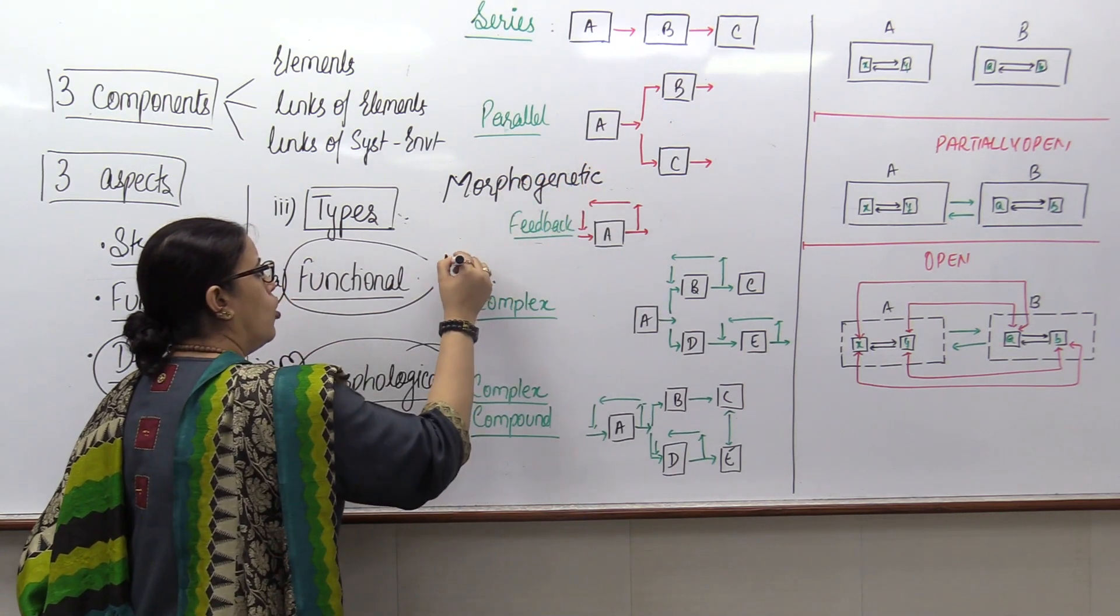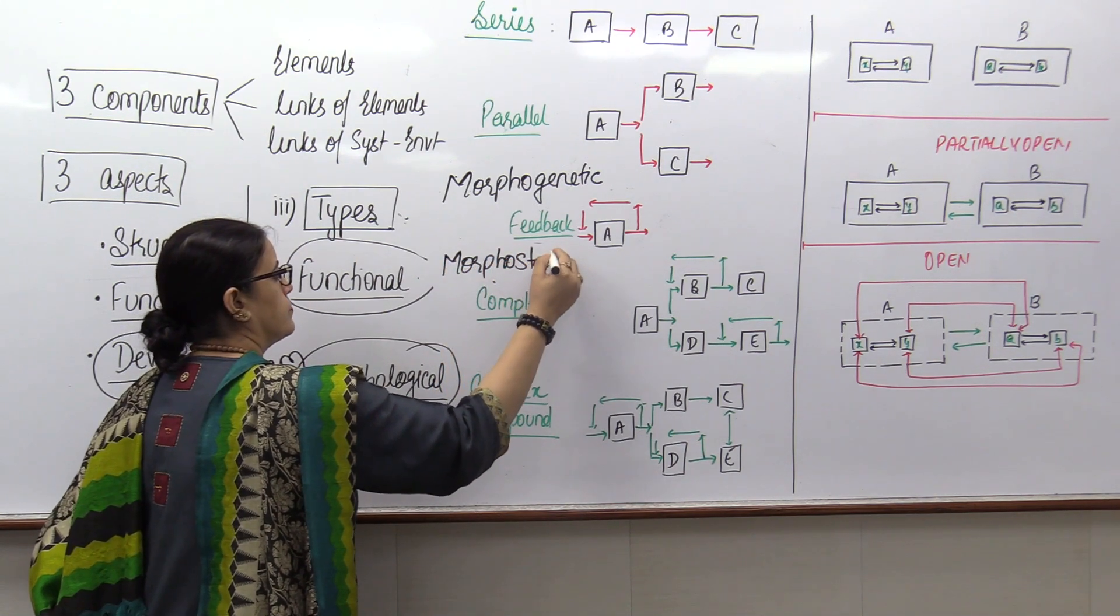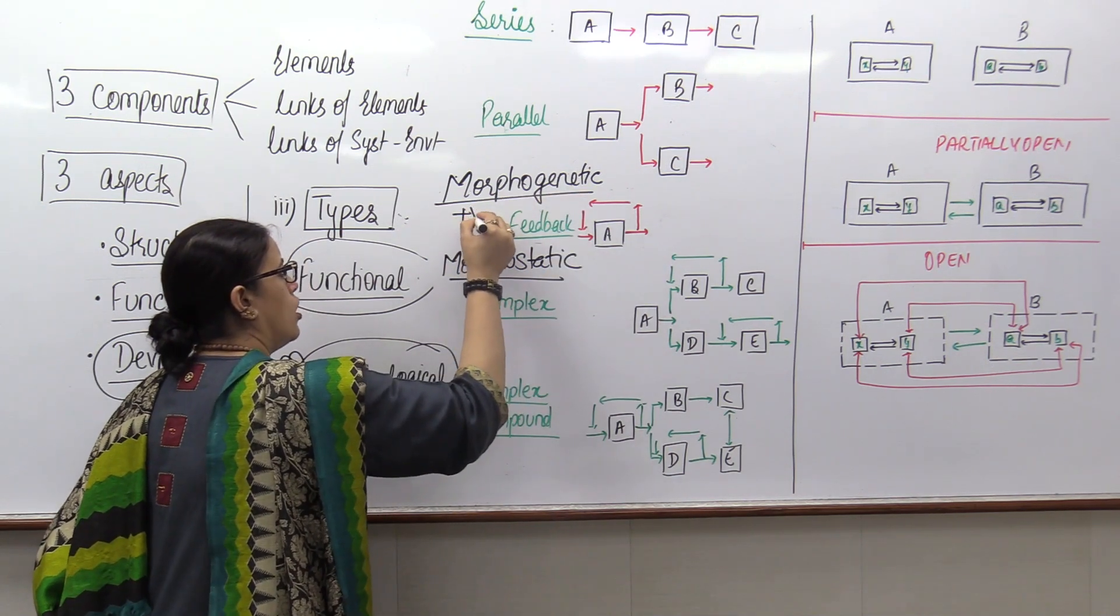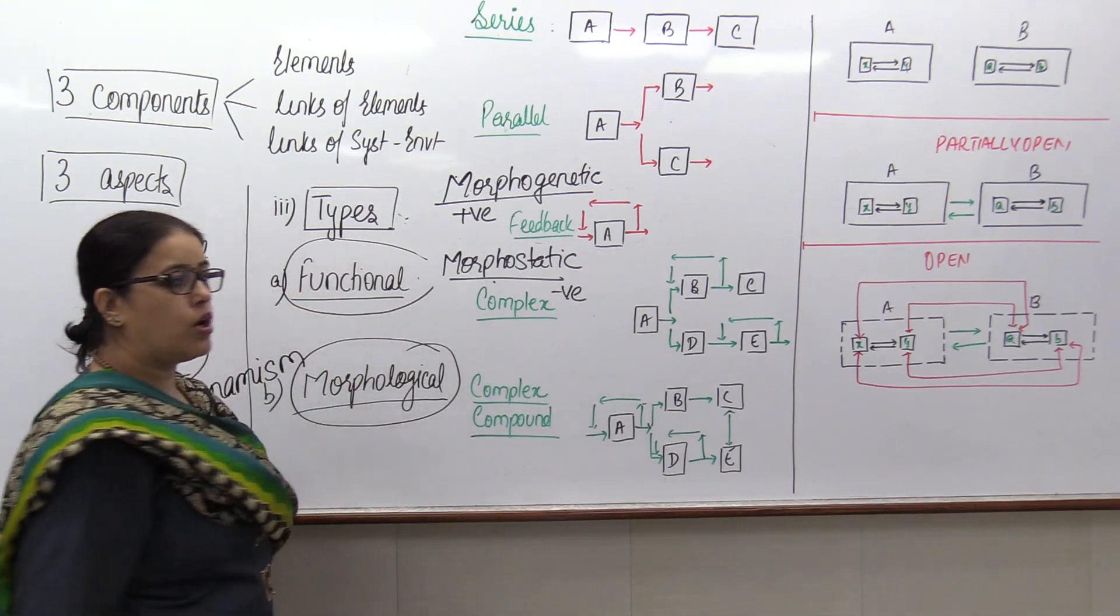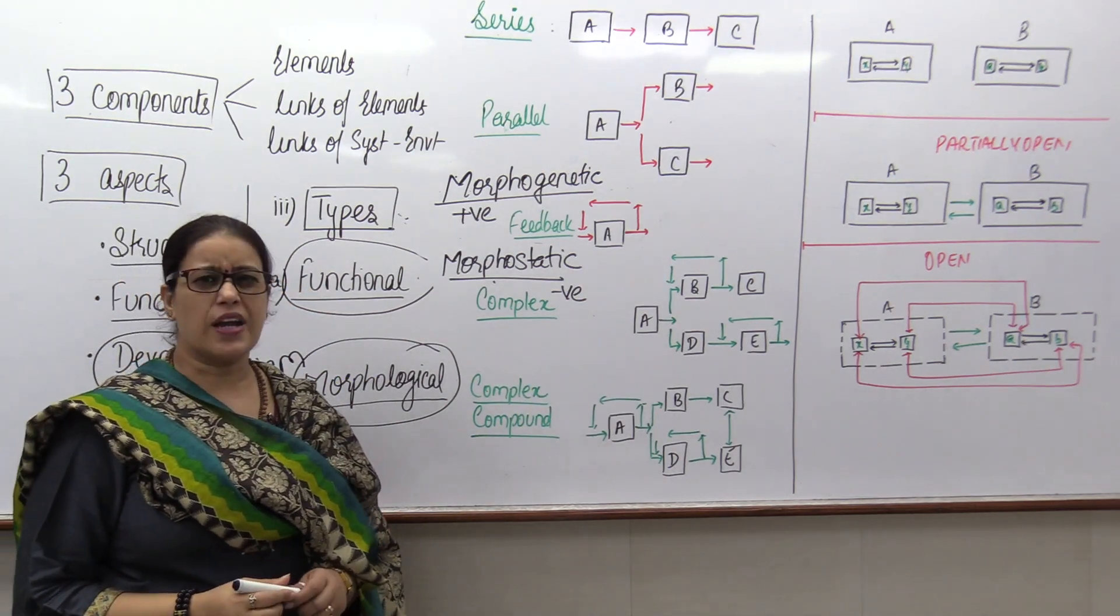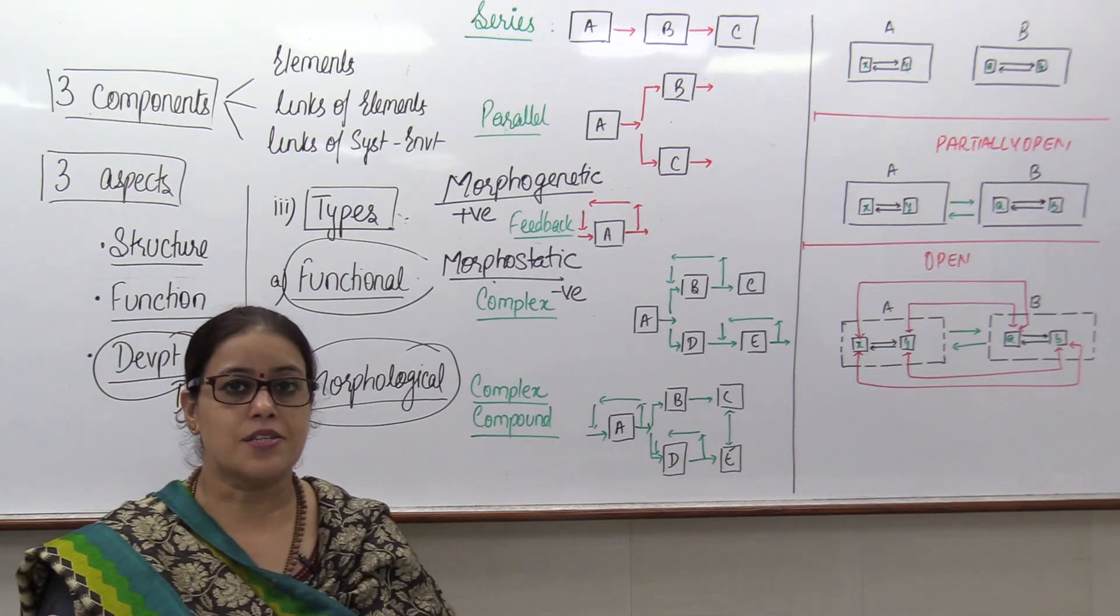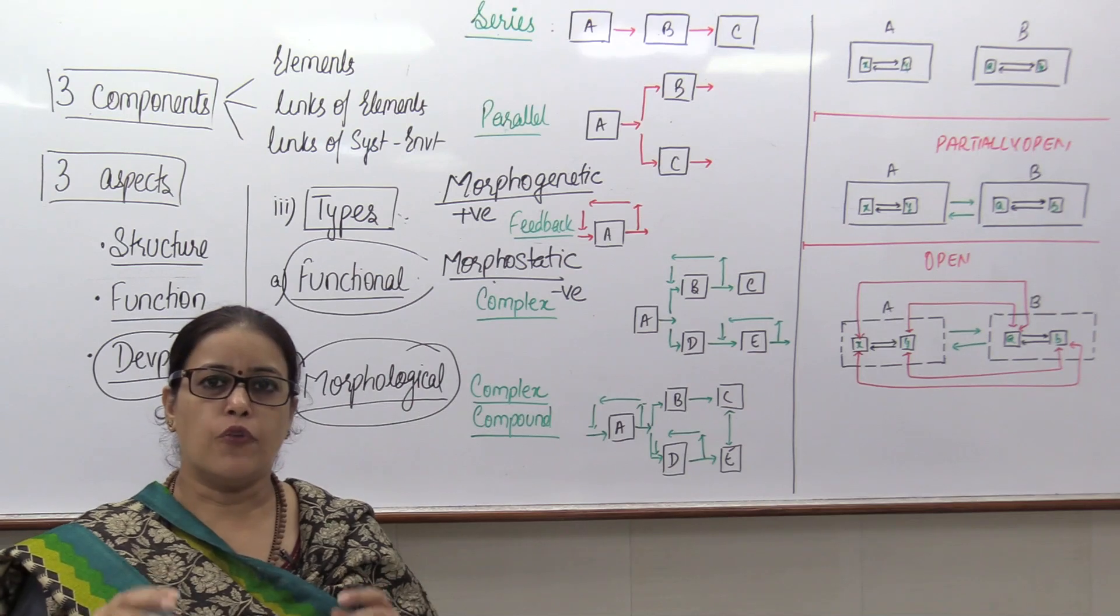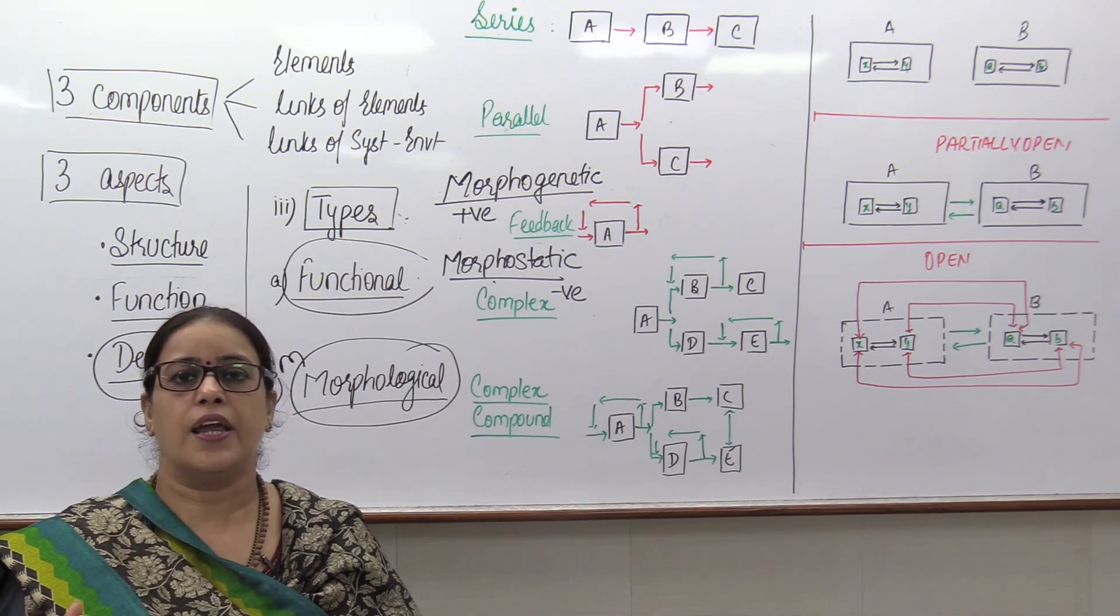Morphogenetic and morphostatic. Morphogenetic is what is called positive system. Morphostatic is what is called negative system. Morphogenetic system is that system that sustains progress. And morphostatic is which is self-sufficient, sort of a static kind of orientation.